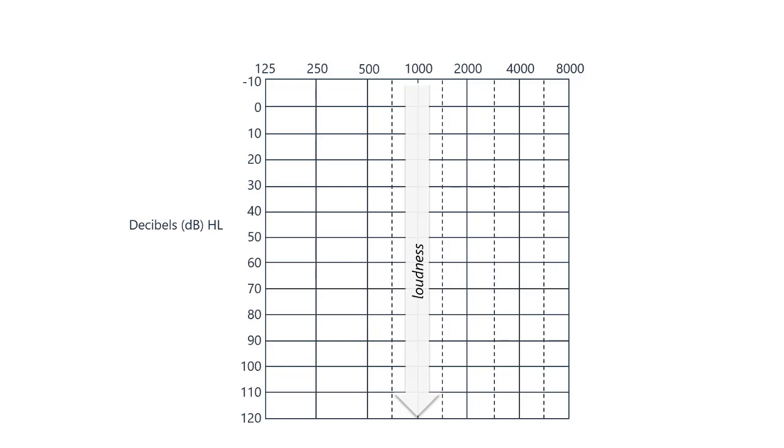As you move down the audiogram, sounds are louder and louder, until they are too loud for the human ear, up around 120 decibels.